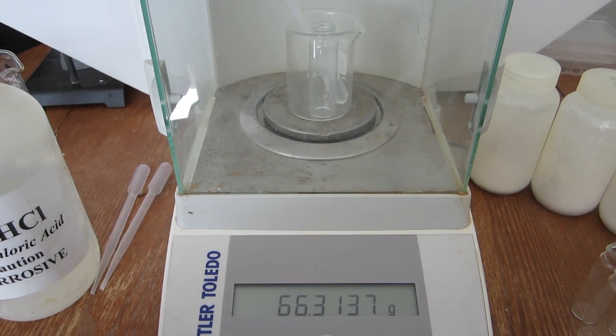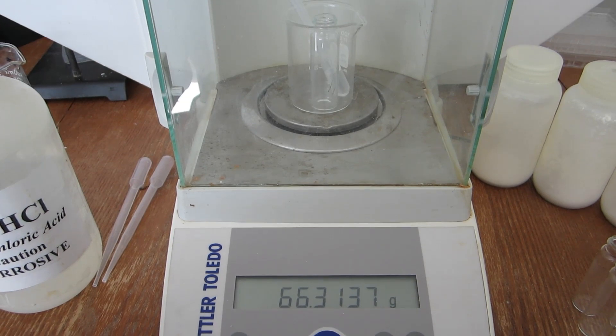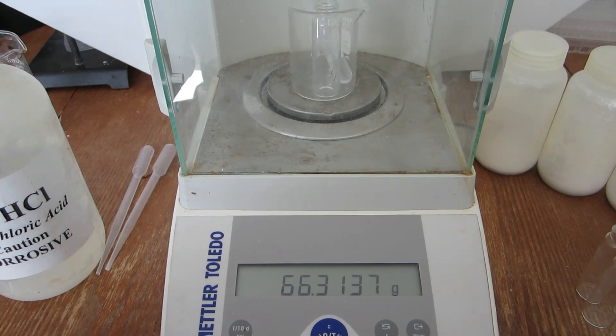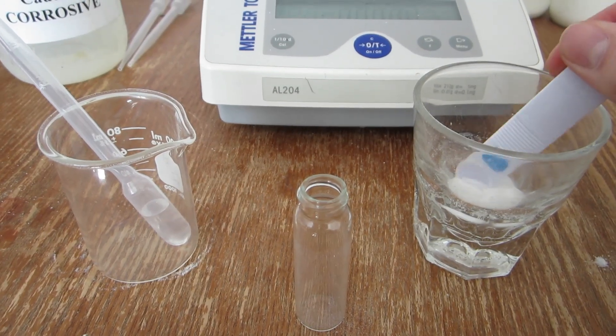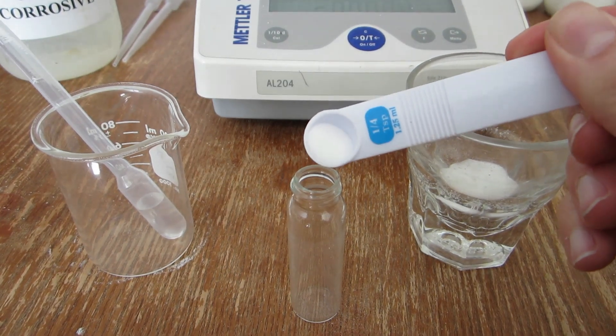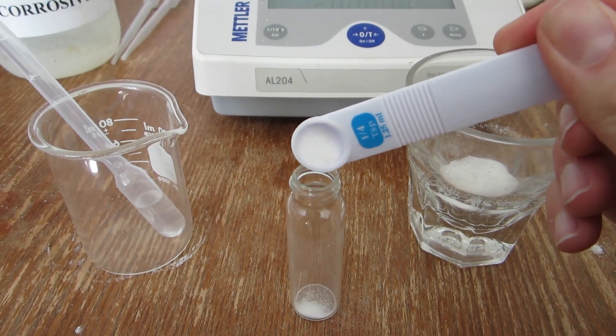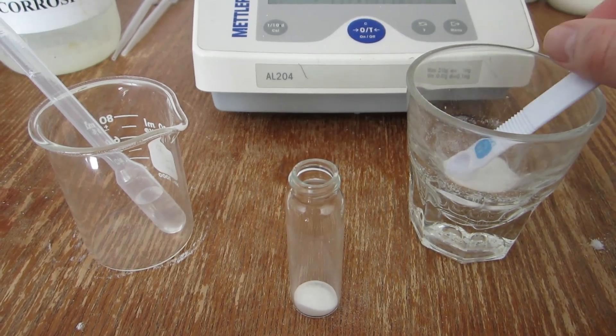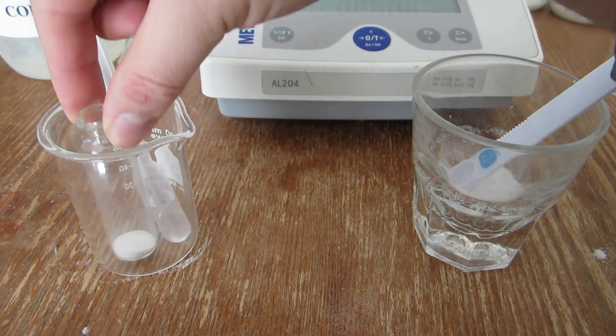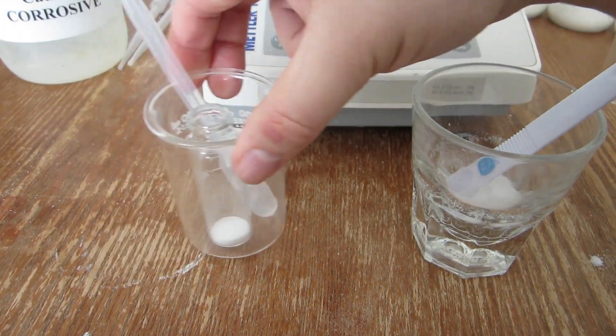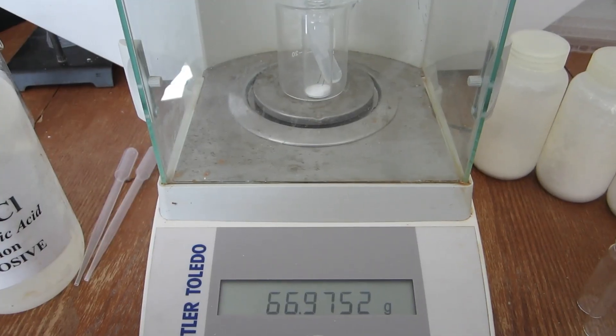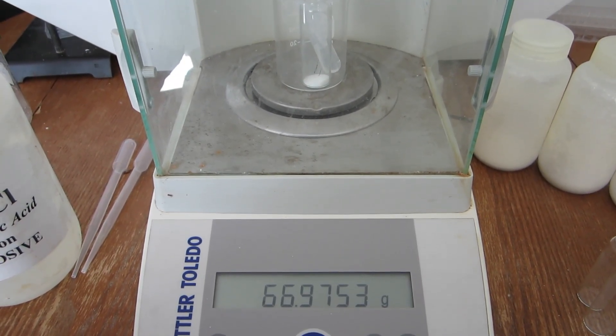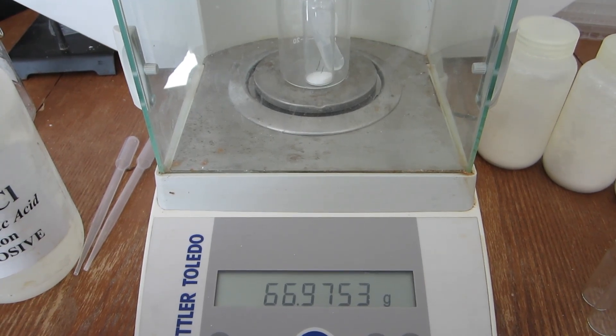For the first trial, the mass of the empty beaker, empty vial, and hydrochloric acid is seen here. Approximately 0.5 grams of sample is added to the vial. This is then placed back in the beaker and the mass recorded. The combined mass of the sample plus the beaker, vial, and acid is seen here for trial number one.